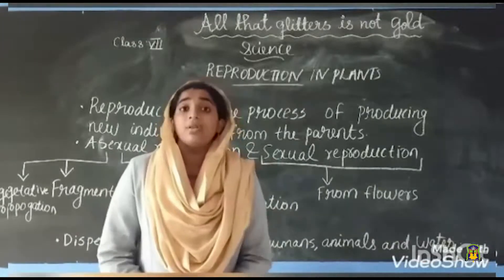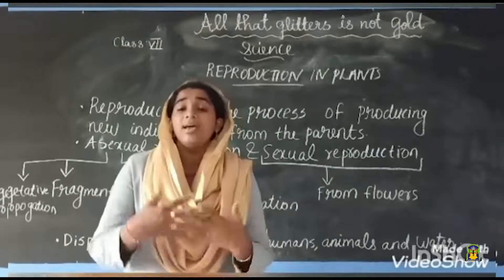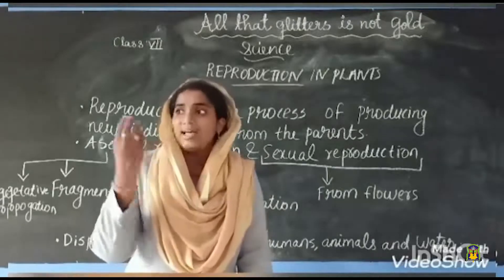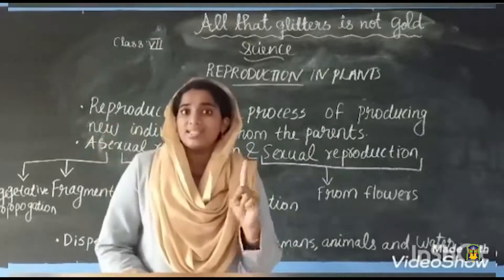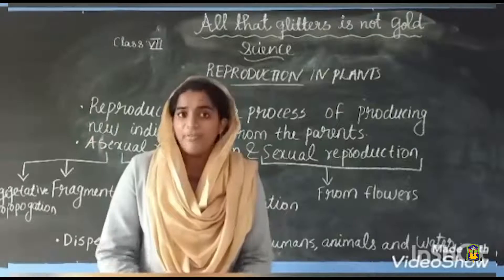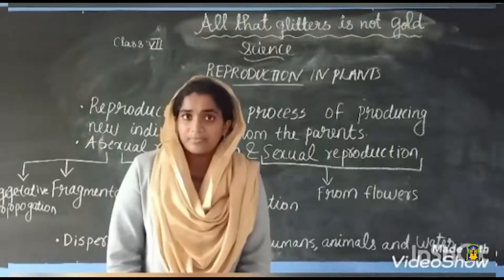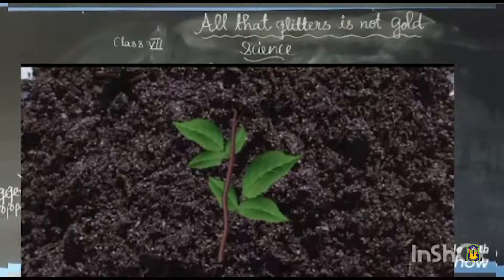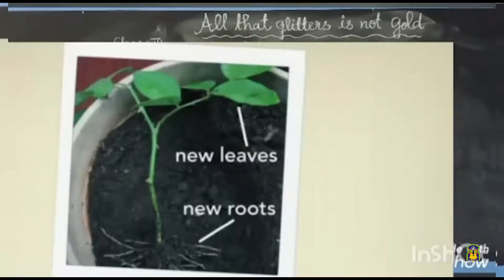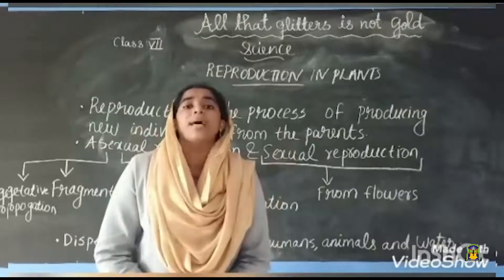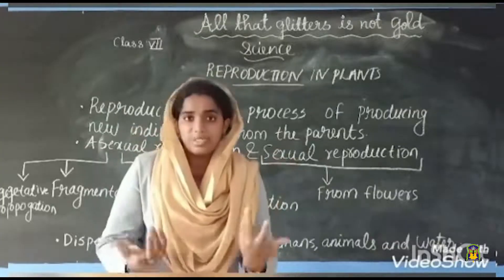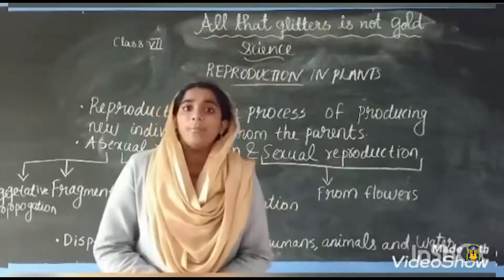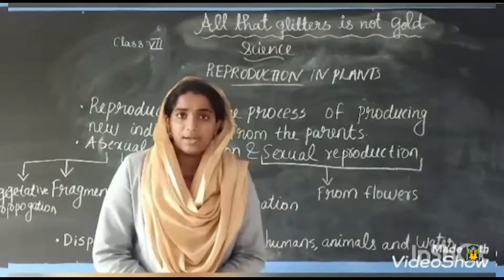Budding is one example of asexual reproduction. For vegetative propagation, we can take the example of roses — we can cut the stem and from that cutting itself new plants will be obtained. That is called vegetative propagation.